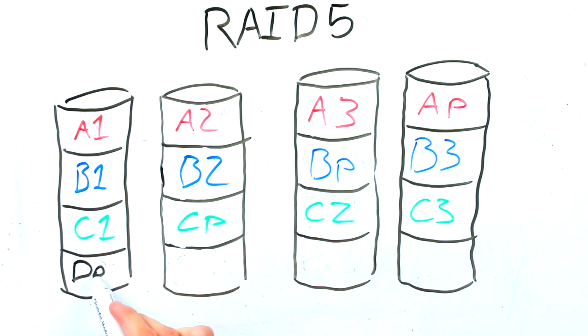You then also have things called stripes. These are colour coded in our example and stretch across all four disks. Now back to parity data. There is a parity block for each stripe in your system. These blocks are basically a compressed version of the data stored in the rest of the corresponding stripe. This is your backup of the data stored in that stripe.